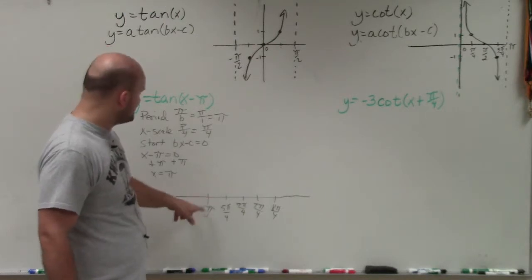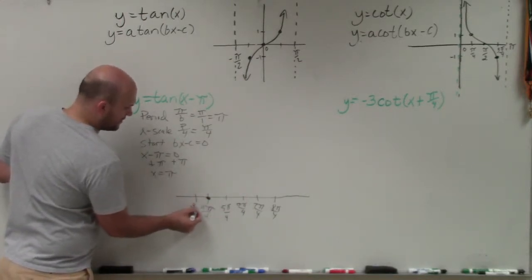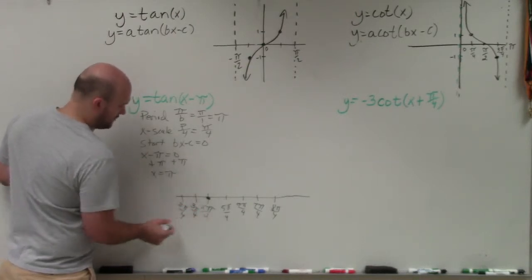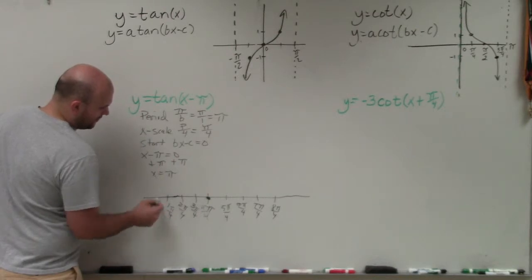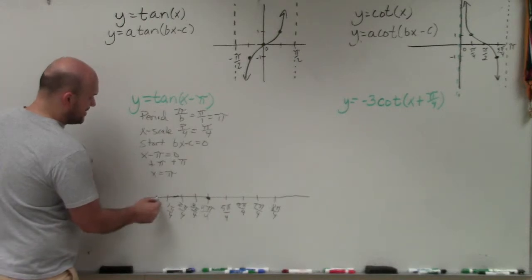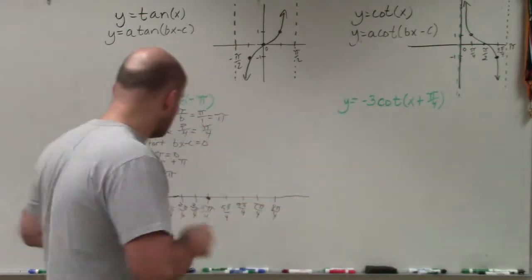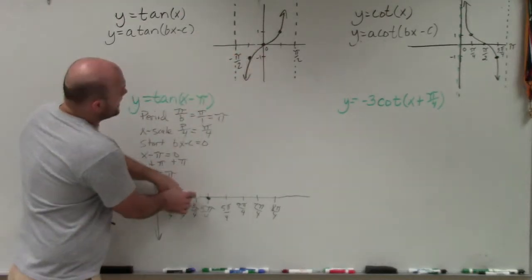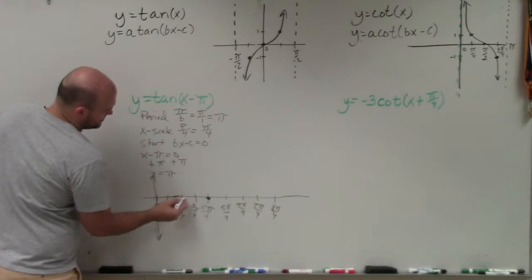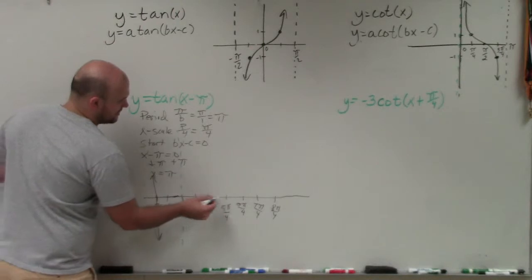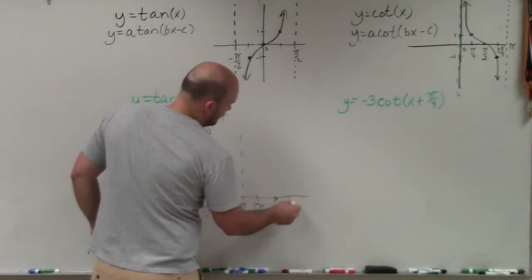So we have four critical points per period. If we start at pi, that's going to be my intercept. That means I'm going to have to go 1 step to the left, which would be 3 pi over 4; 2 steps to the left would be 2 pi over 4, which is pi halves; then 1 pi over 4, and then 0, which is just 0. Where 0 is, that's going to be your y-axis. Remember, here's our starting point: the next point is your intercept, the next critical point is your asymptote, then point on the graph, asymptote, point on the graph, intercept, point on the graph, asymptote.